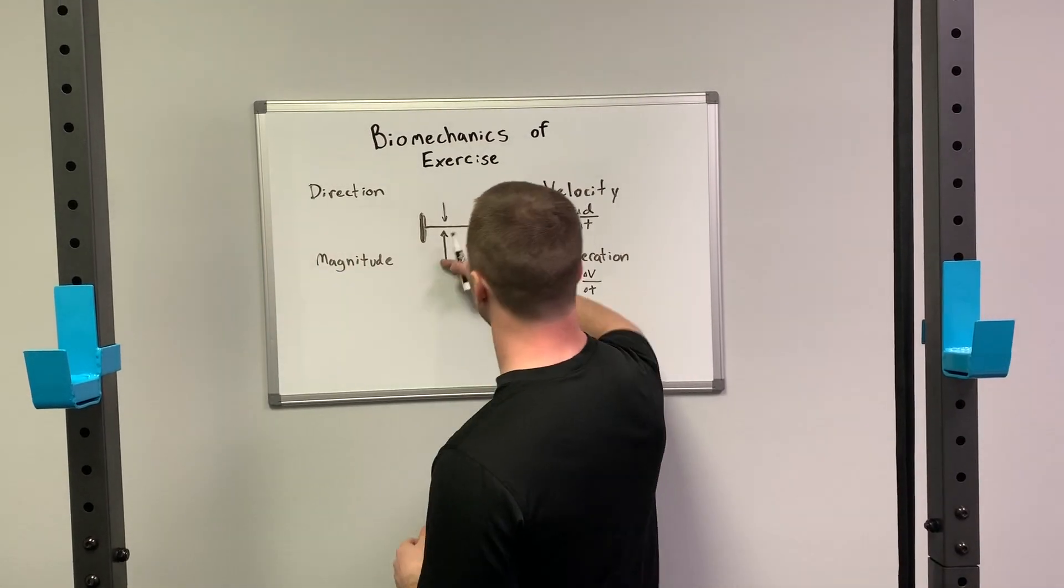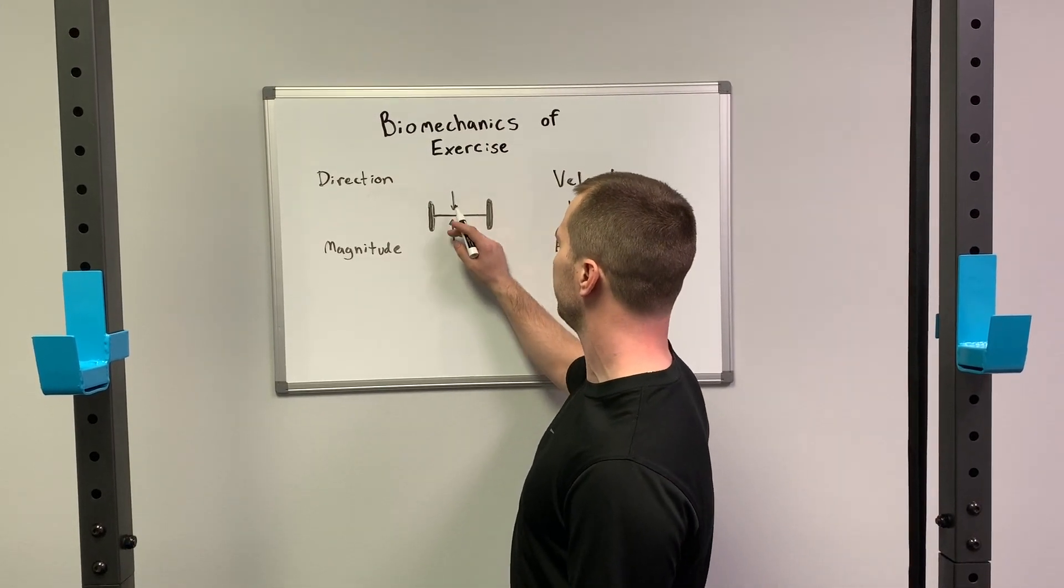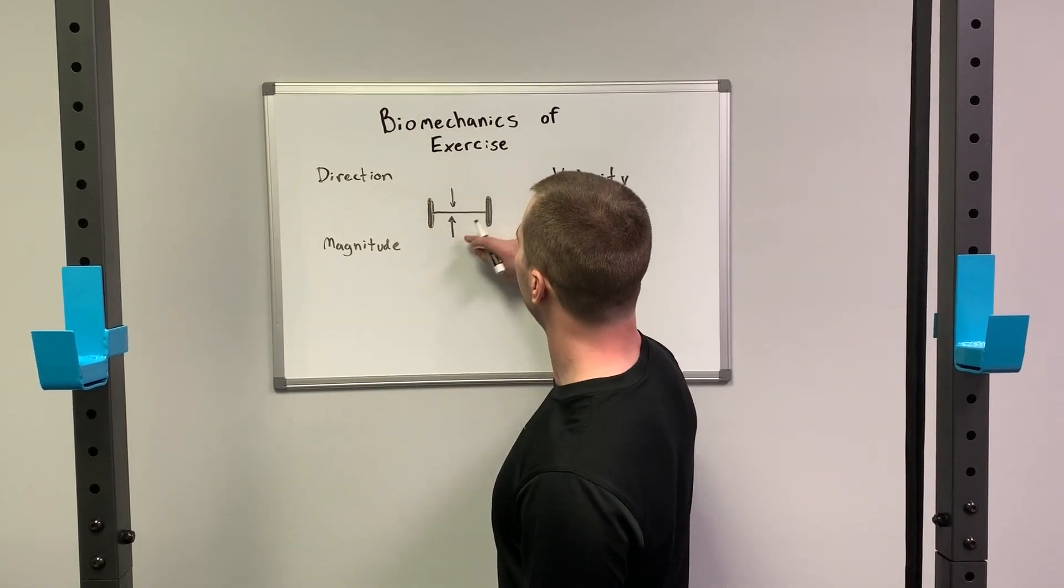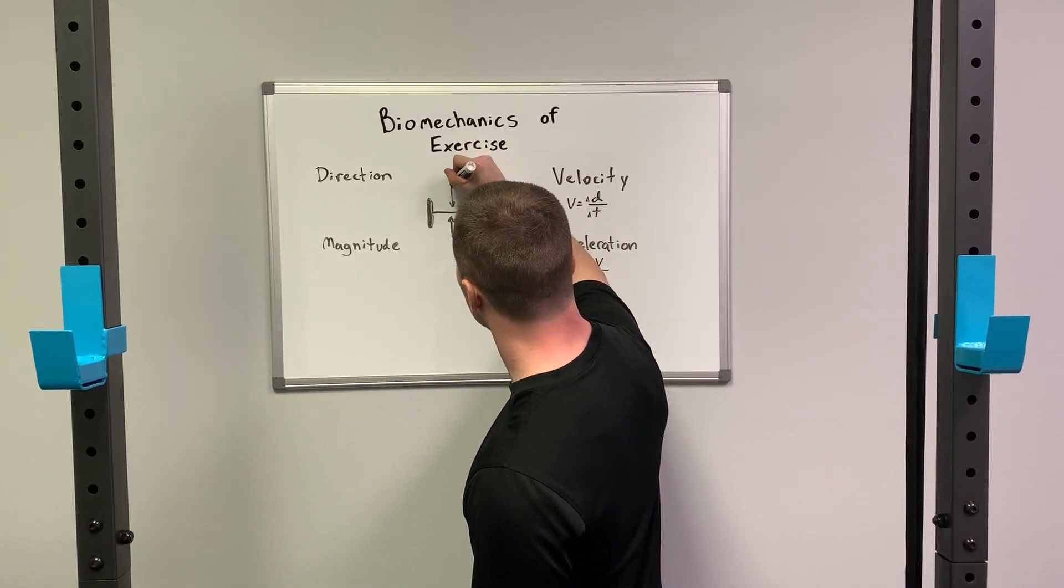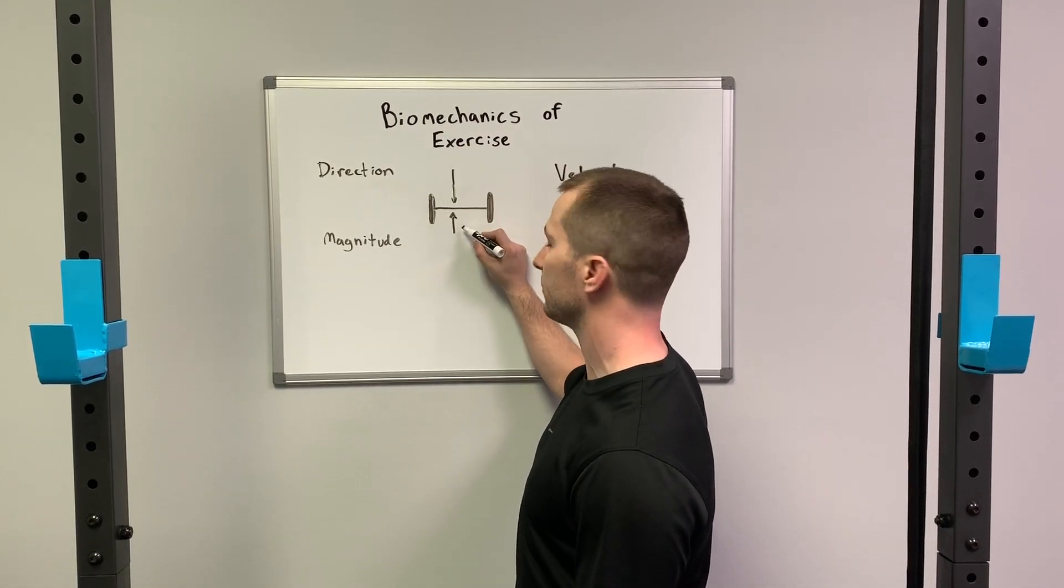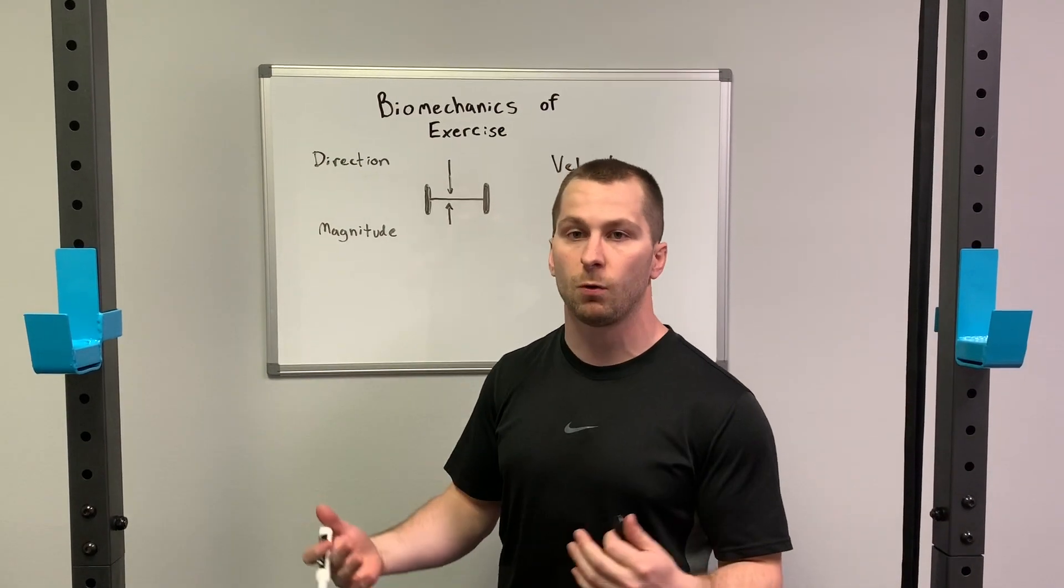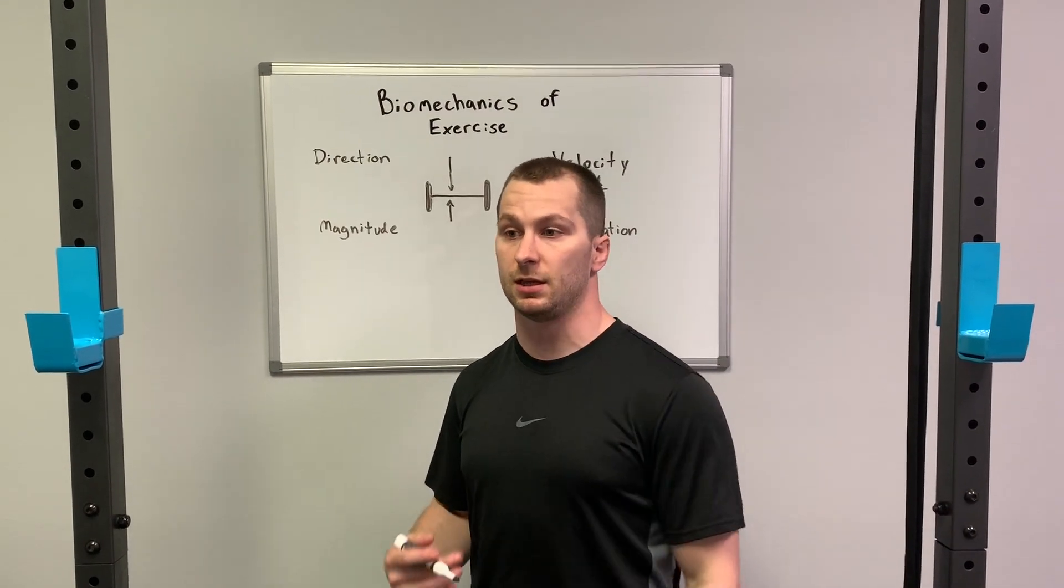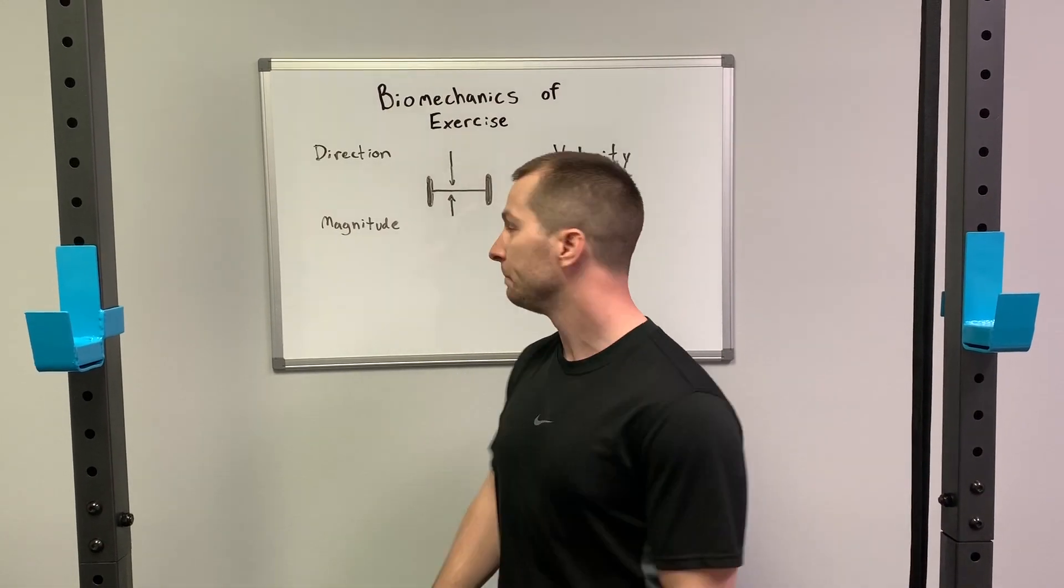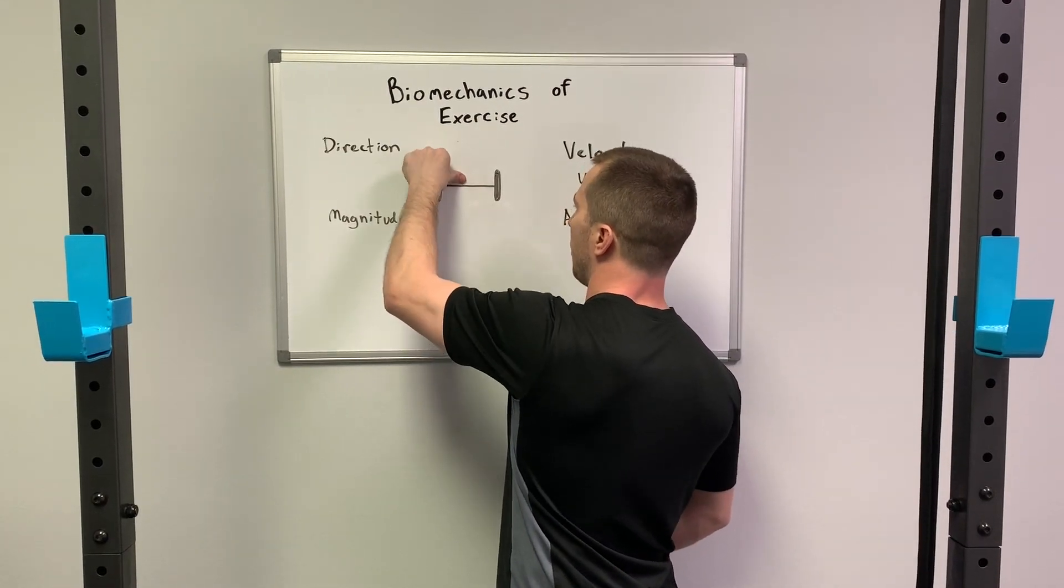Now at the top, once I raise it up to the top, now these vectors are even. I'm applying the same amount of force as gravity is pushing down on it and the bar is not moving. Now when I lower it back down, that changes and now the vector of gravity is overcoming my force vector of pushing up against the bar. Hence, the bar moves back down. So vectors are going to control basically our movements in direction and even how fast they will end up going.